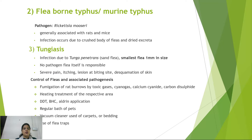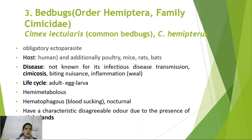Flea control includes fumigation of rat burrows with toxic gases such as cyanogas (calcium cyanide), heat treatment, insecticides like DDT and BHC, regular bathing of pets, vacuum cleaning of carpets and bedding, and use of flea traps.